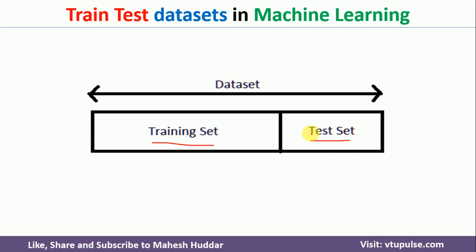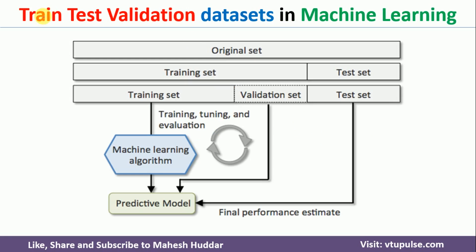The extended version of this model is something called train-test-validation. In this case, again the original data is divided into training and testing sets. This training set is again divided into two parts: the training and validation set. With the help of the training set, we will train our model. Once training is over, we will see the performance of that model with the help of the validation set.